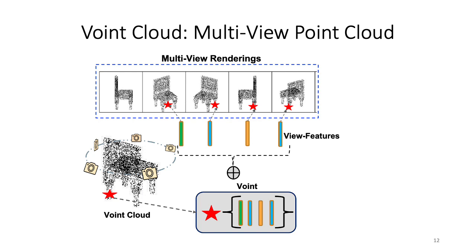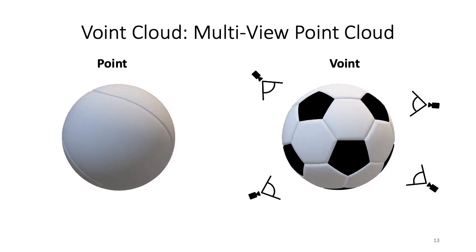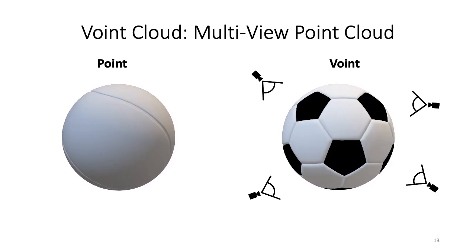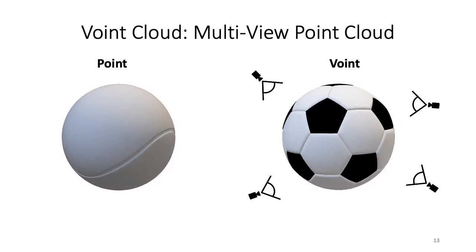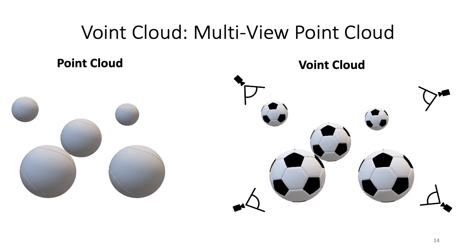We propose the multi-view point cloud, or shortly, Voint Cloud — a novel 3D representation that is compact and naturally descriptive of the view projections of a 3D point cloud. Each point in the 3D point cloud is tagged with a Voint, which accumulates view features for that point. The core assumption is that Voints have variable values based on the viewing direction, while previous methods assume fixed values for points. These views are shared across all the Voints, which constitute the point cloud.